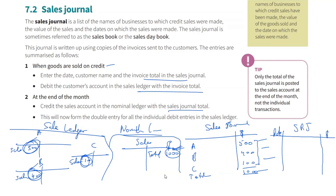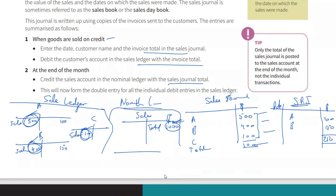Let's say A returned goods worth 100 and B returned goods worth 150 — total 250. During the year we credit A's account. Don't look at it as a human — look at it as a receivable. Our receivables are going down, so we credit that account. B also went down by 150. Under the nominal ledger, your sales returns account will be debited by 250 — the total returns for the period. Your sales were 1000, your returns were 250. Sales account is credited; sales returns account is debited.